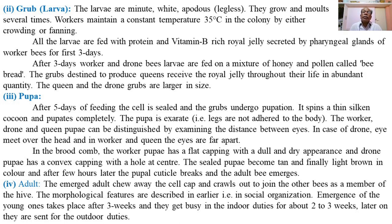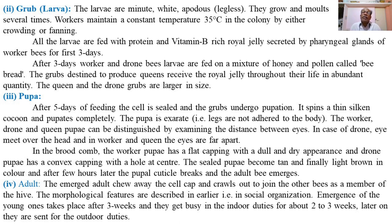All larvae are fed protein-rich and vitamin-rich royal jelly secreted by the pharyngeal glands of the workers for the first three days of larval development. The larvae of all castes — worker, drone, and queen — developing in their respective brood cells receive this special food for the initial three days only.